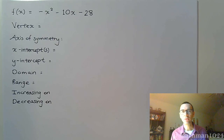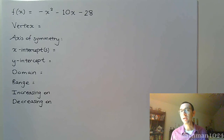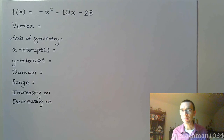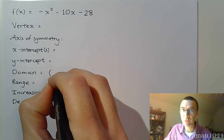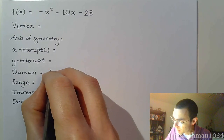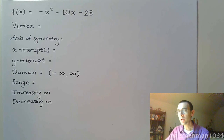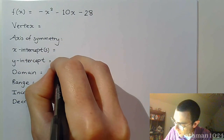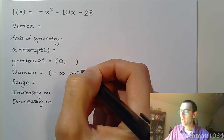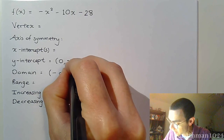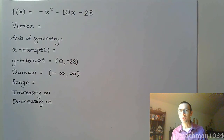This is the last video in this section about graphing quadratic functions. In this example, f(x) = -x² - 10x - 28, and this is all the information we want to find. The domain for any polynomial — in particular a quadratic function — is all real numbers, from negative infinity to infinity. For the y-intercept, we plug in zero, which gives us negative 28. That's a very large y-intercept, so we won't see it on our standard graphing grid.